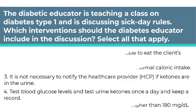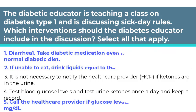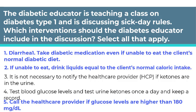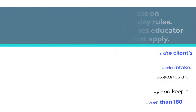The correct answers are 1, 2, and 5. The most important issue is to teach clients to take insulin even if they are unable to eat, as glucose levels are increased with illness and stress. The client should drink liquids such as regular cola, orange juice, or regular gelatin to provide enough glucose to prevent hypoglycemia when receiving insulin. The healthcare provider should be notified if blood glucose is 180, and regular insulin may be prescribed. The other answers are eliminated because ketones indicate fat breakdown and must be reported as they can lead to metabolic acidosis, and blood glucose and ketones must be checked every 3 to 4 hours, not daily.